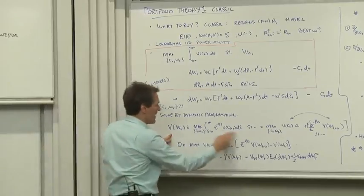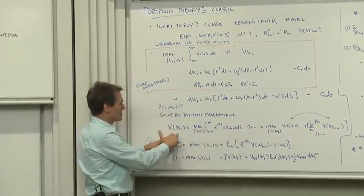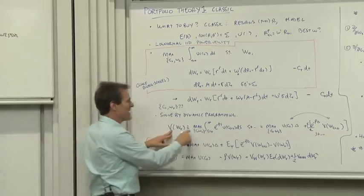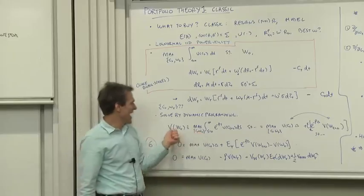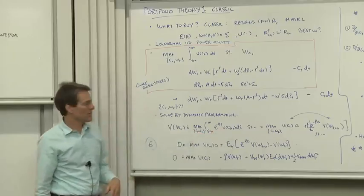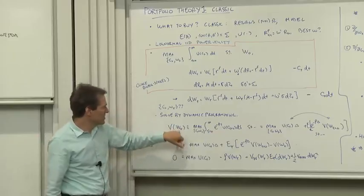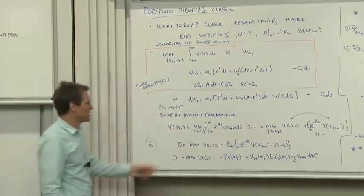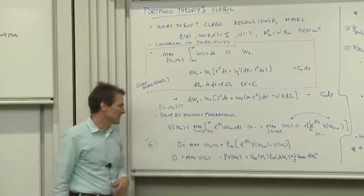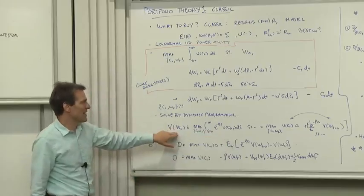We start by defining the value function. The value function, V of W, is defined as the maximized value of utility. So after you're all done, how happy do you get from your portfolio decisions at that date? And it's a function of W, because if I gave you more money, you could get a higher level of realized optimized lifetime utility. So that defines the value function.